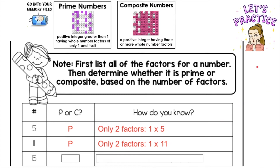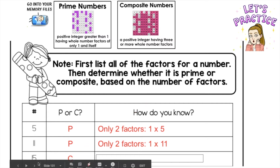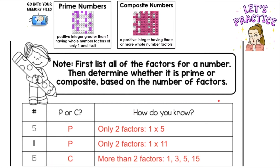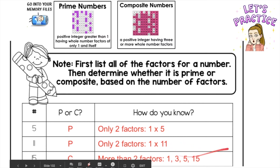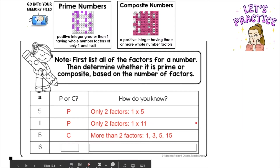Our next one is 15. You would go: 15 times one always works. But what about five? Five, ten, fifteen — so I have two ways to get to 15 with factor pairs. I have more than two factors: one, three, five, and fifteen. That's why yesterday we listed our factors in number order. One times fifteen is the first factor pair, and three times five is our second factor pair. So we have more than two factors, and it is confirmed composite.